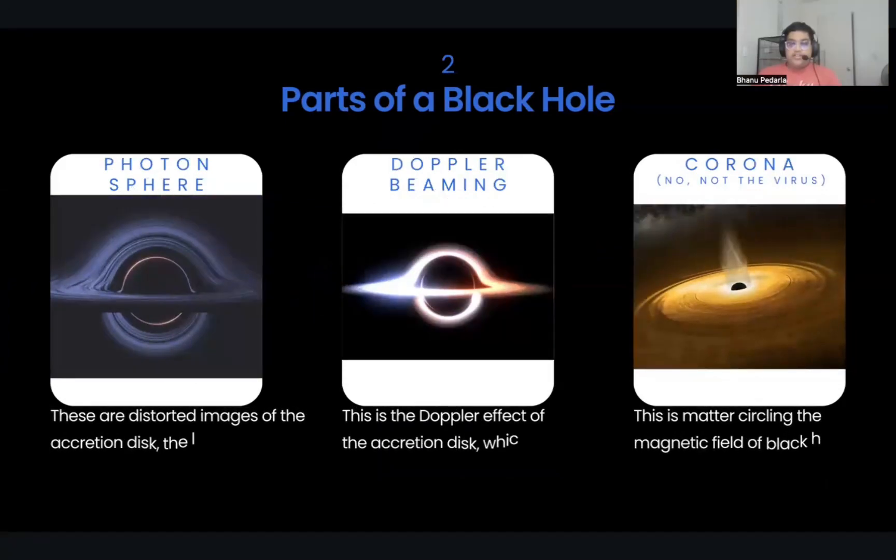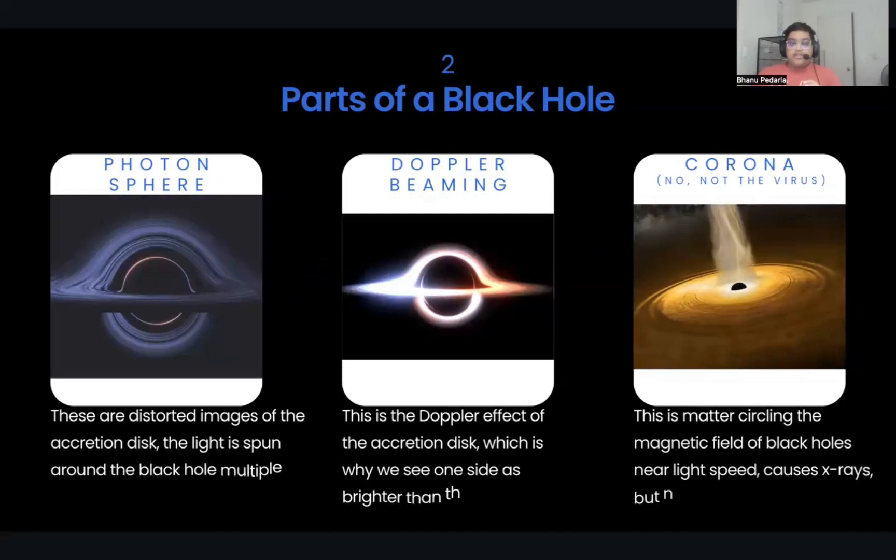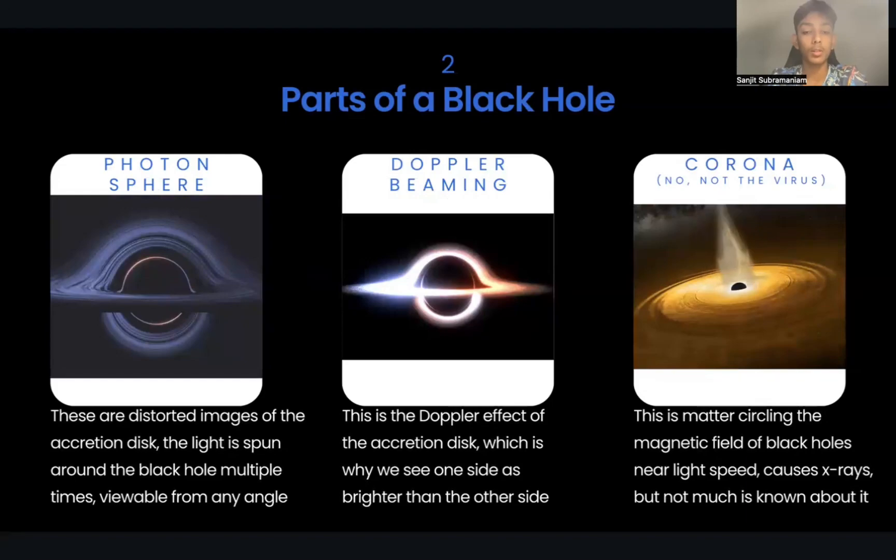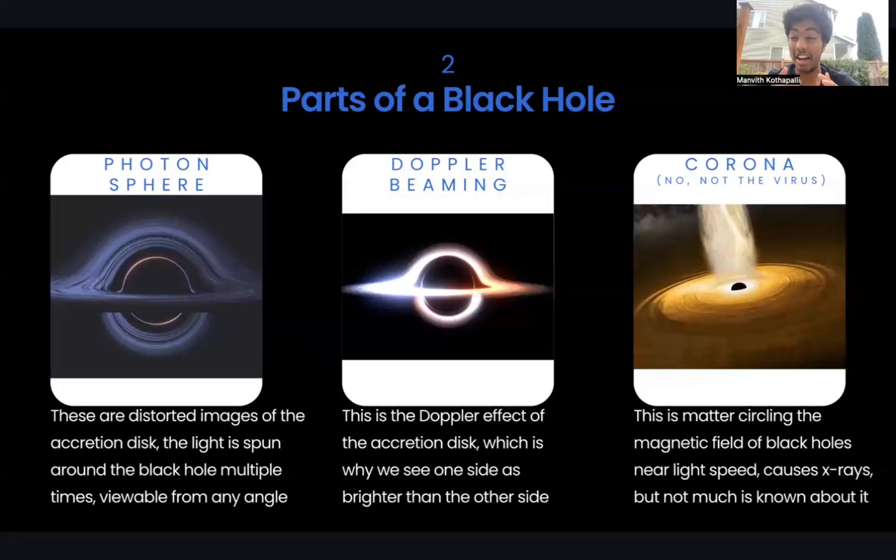What the photon sphere is, is just matter swirling very close around the event horizon before it escapes. We see it as super thin rings around the event horizon, as you can see in the image. And next, we're talking about Doppler beaming. Doppler beaming is basically the Doppler effect working on the matter and energy swirling around the black hole, causing one side to look slightly brighter than the other side. Next we're going to talk about the corona. Before we talk about that, gravitational lensing is why you see the type of black hole you saw in the movie Interstellar.